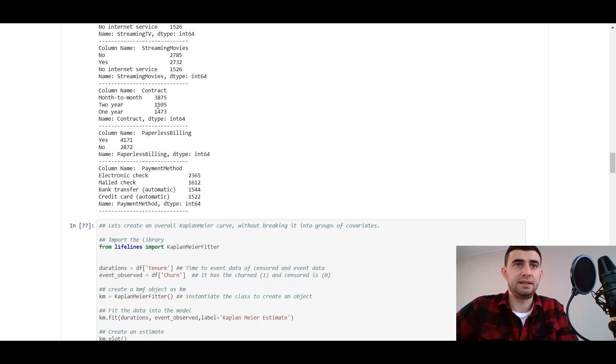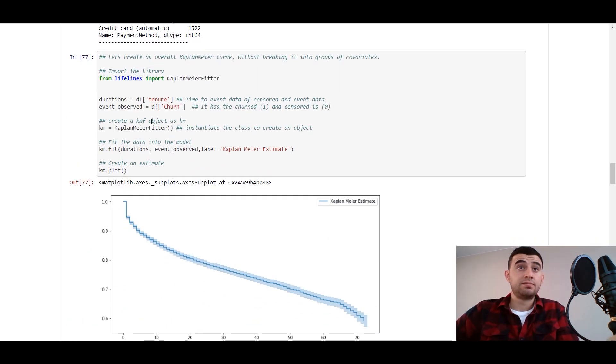For gender it's like equal, for partner like equal, it's not equal for dependents, phone service and many others. I would leave you a link and you can see it by your own. Now the point, let's create an overall Kaplan-Meier curve. It would be overall without breaking into groups of covariates. We're using the lifelines library and using Kaplan-Meier fitter, it's so simple guys.